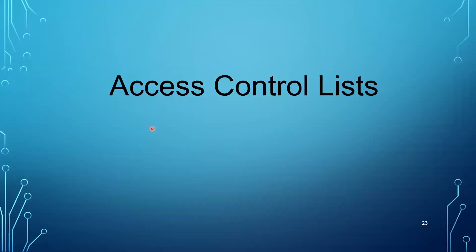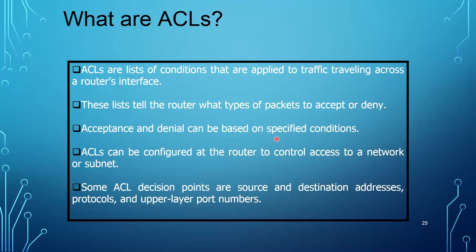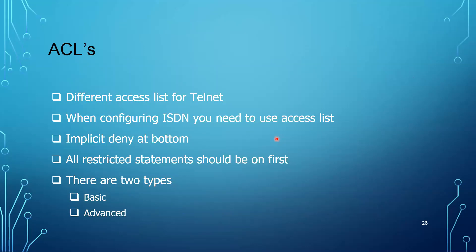The ACL doesn't only do packet filtering — it can also be used as a traffic classifier. It helps a lot in classifying traffic. It can be used in route filtering, and as a traffic classifier in quality of service, and many other use cases. In this session, I'm going to explain ACL as a packet filter. The ACL is a set of rules with two types: permitting the traffic or denying the traffic. When we apply the ACL, we apply it in a router on a certain interface, either to the inbound traffic or the outbound traffic.